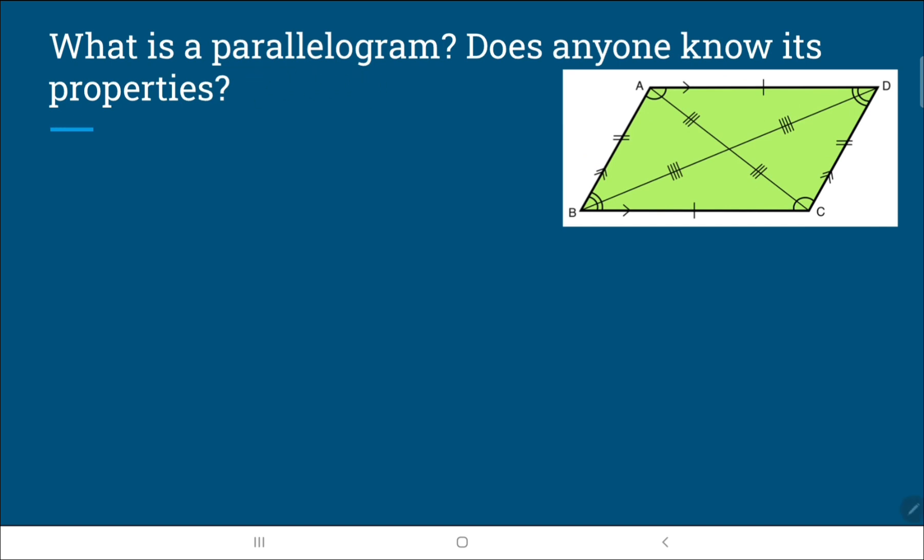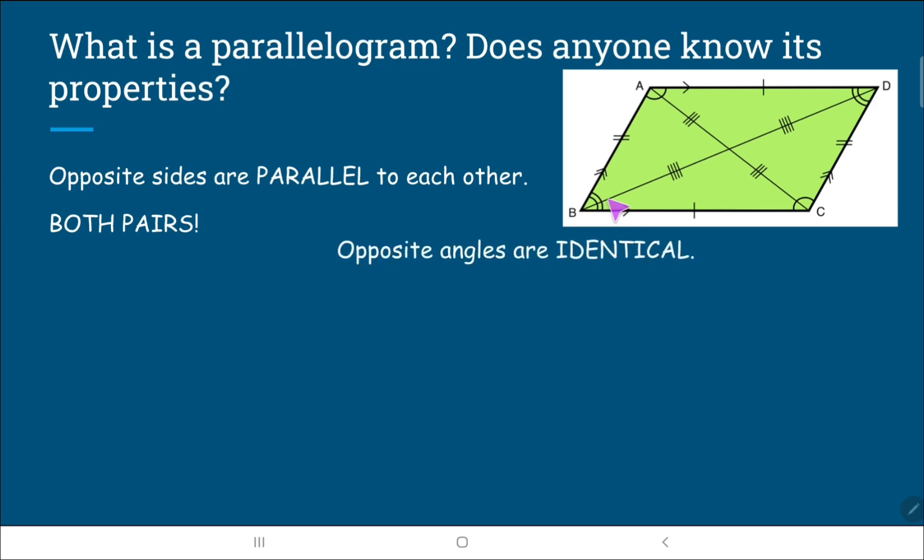Now, the most distinctive characteristic of a parallelogram is the fact that the opposite sides are actually parallel to each other. So AB is parallel to DC. AD is parallel to BC over here. So both pairs, these two and these two, are both parallel to each other. Another thing is that the opposite angles are identical. So the angle at A is equal to the angle at C, and so for the angle at B and D.